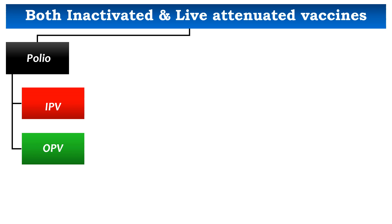The OPV vaccine was first developed by Albert Sabin, Koprowsky, and Cox in the year 1955, and it is available in trivalent, bivalent, and monovalent forms.